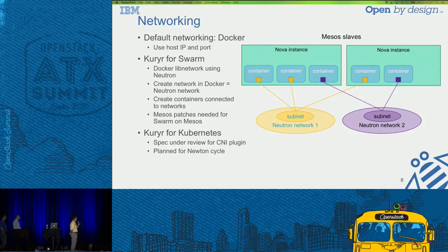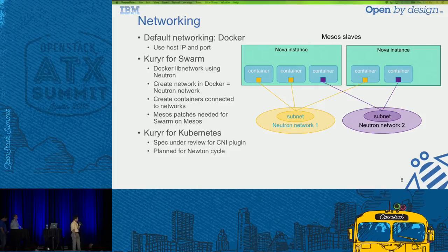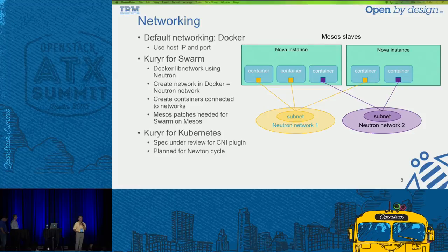For Kubernetes, we don't have support yet for that kind of networking. But the Kuryr team does have a spec to implement CNI networking for Kubernetes, which is under review now, and we expect the implementation will be done in the Newton cycle.